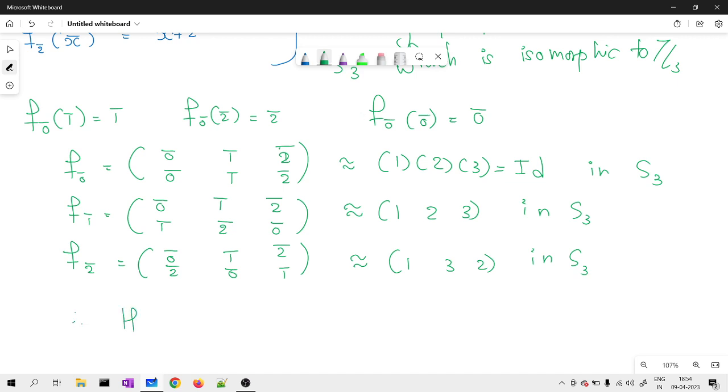Therefore, my H which is same as {identity element, (1, 2, 3), (1, 3, 2)} is a subgroup of S3 isomorphic to my Z3. So, this is the way you are supposed to think.